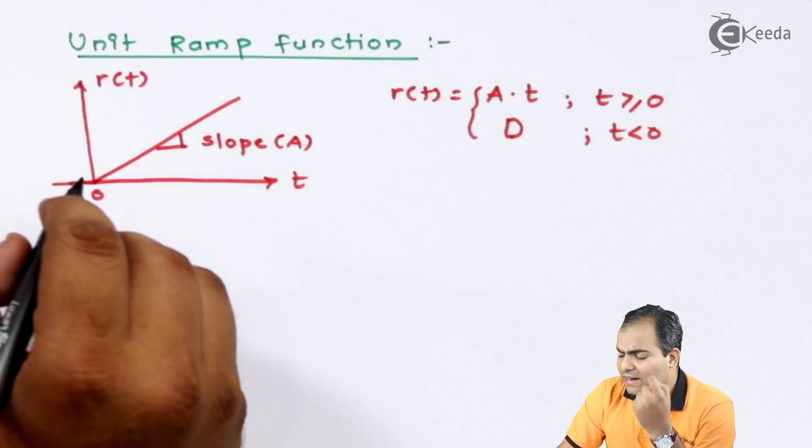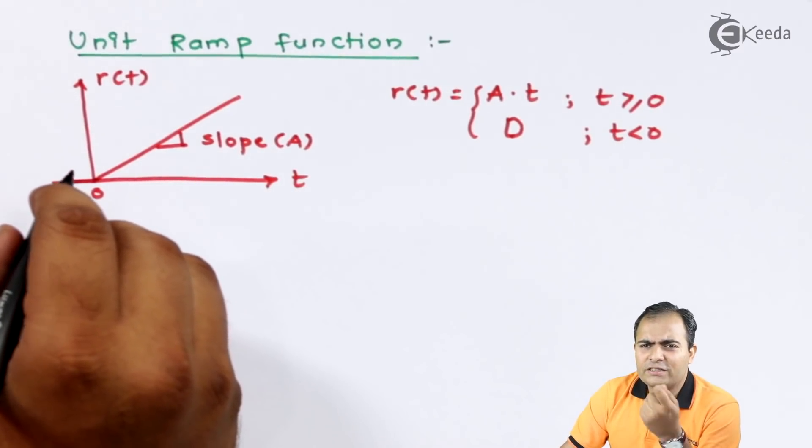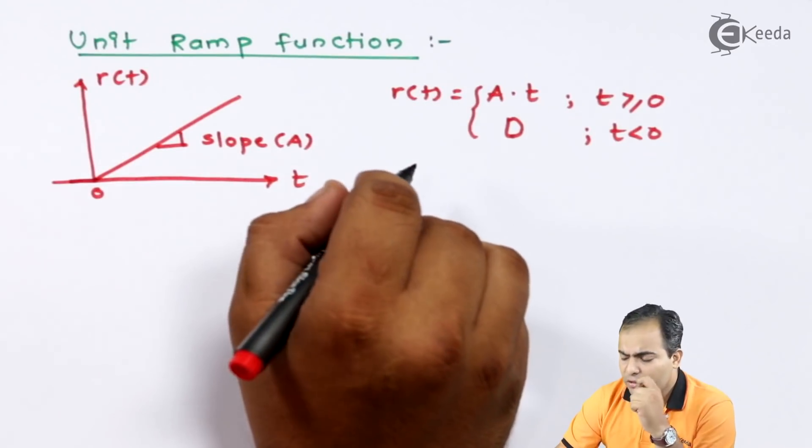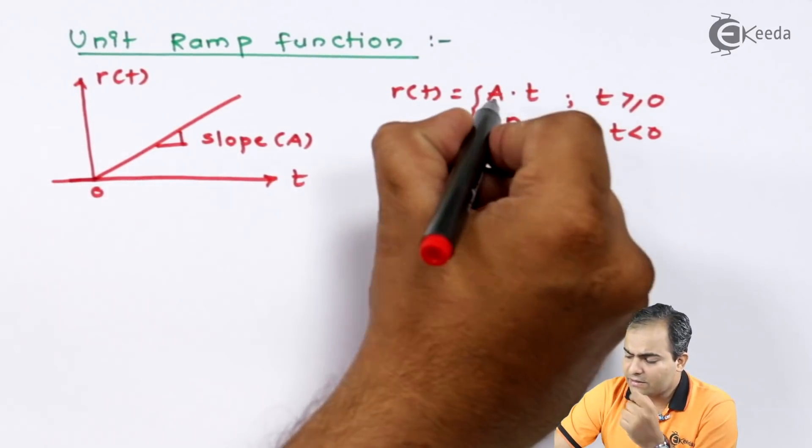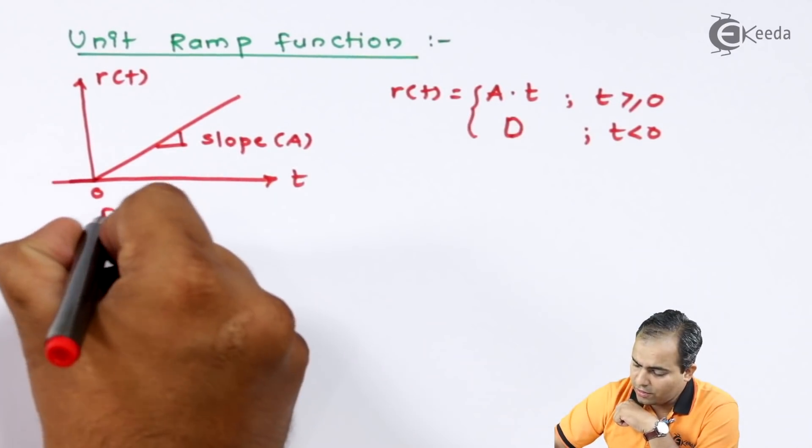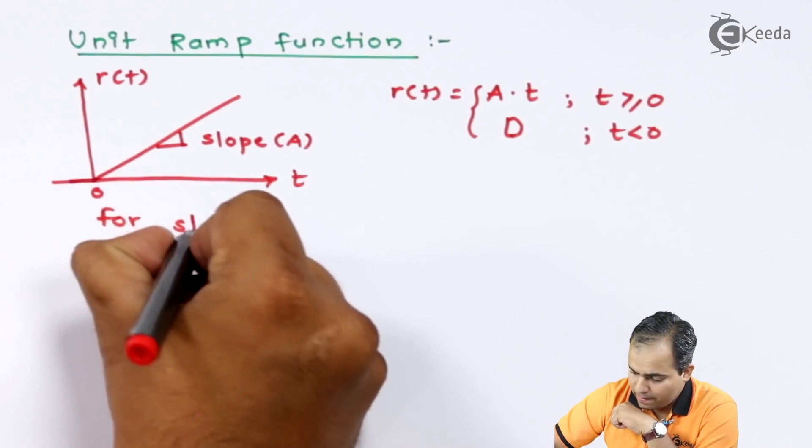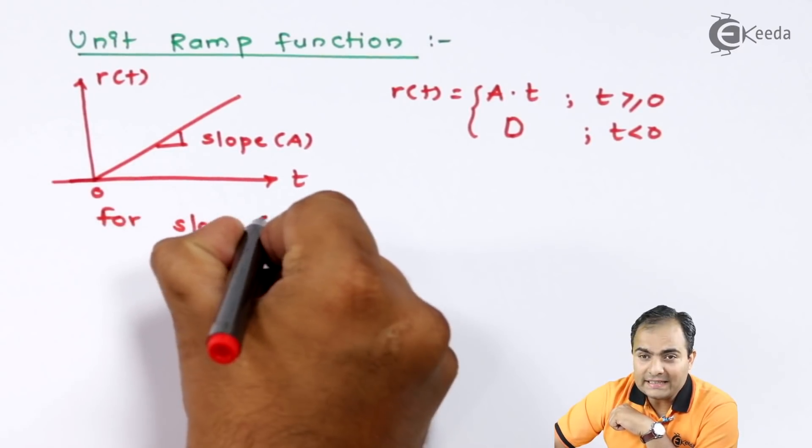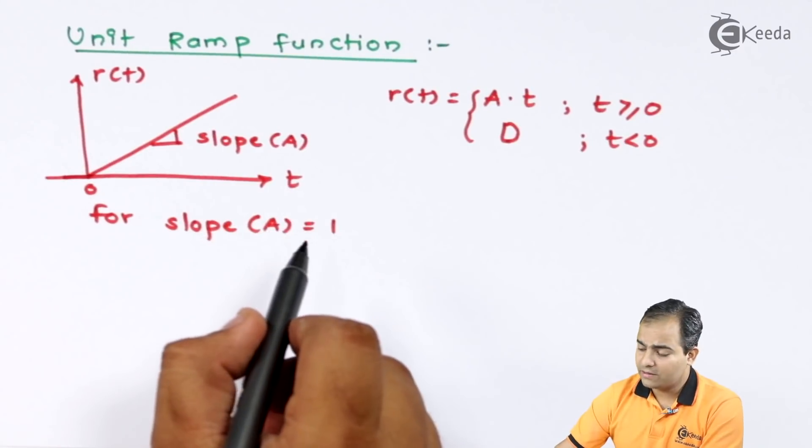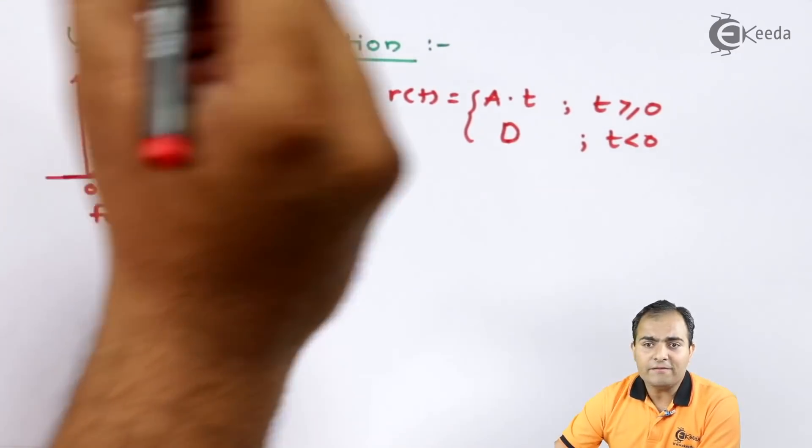Now, how this graph increased or changed its value by changing the a value. Let's take one example. Let's say if your a value is 1 for slope, that is a is 1. This graph is a ramp function.